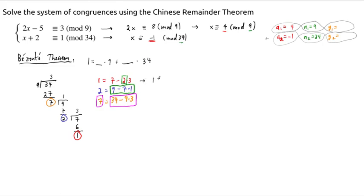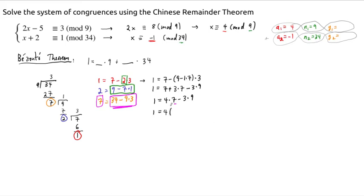Substituting in: 1 equals 7 minus (9 minus 1 times 7) times 3, which simplifies to 1 equals 7 plus 3 times 7 minus 3 times 9, or 1 equals 4 times 7 minus 3 times 9. Then we plug in 7 equals 34 minus 9 times 3 for the 7: 1 equals 4 times 34 minus 12 times 9 minus 3 times 9, which gives us 1 equals 4 times 34 minus 15 times 9.